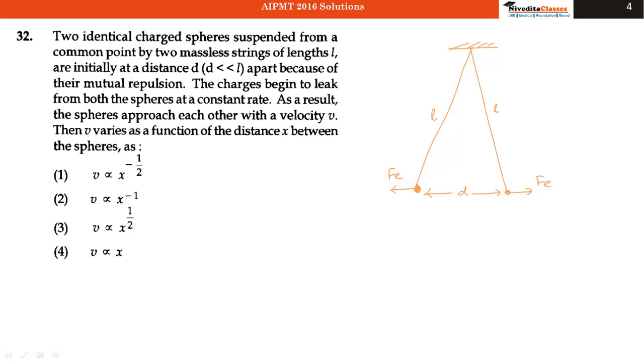The charges begin to leak from both the spheres at a constant rate. As a result, the spheres approach each other with a velocity V. Now we have to find the relation between V, the velocity, and the distance X between these two spheres.